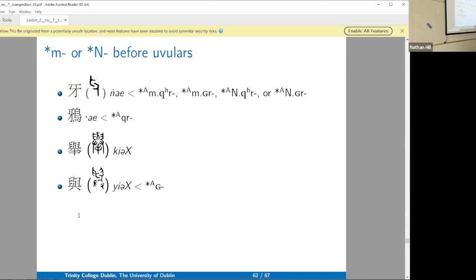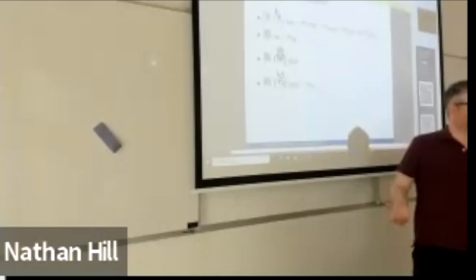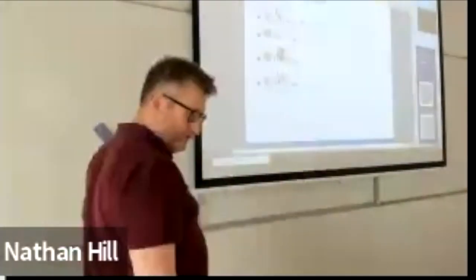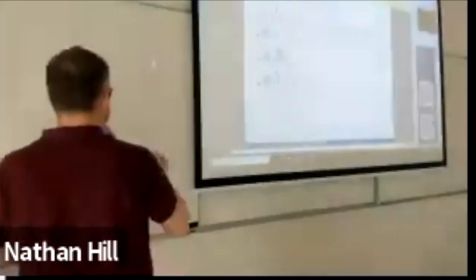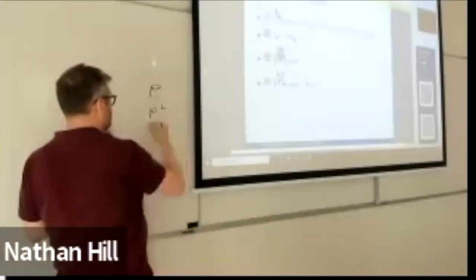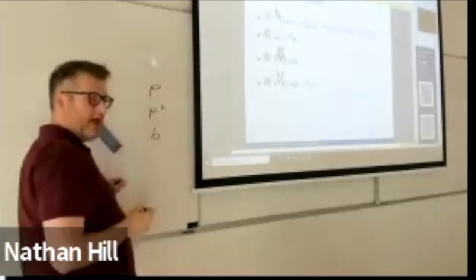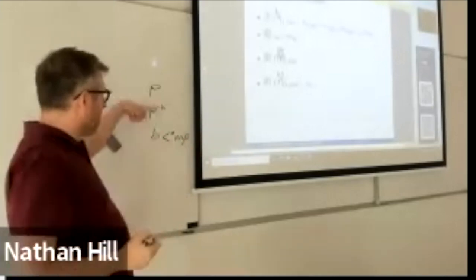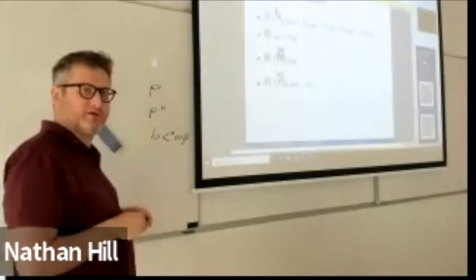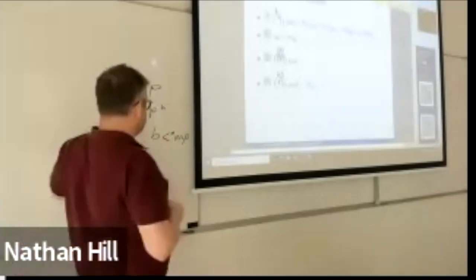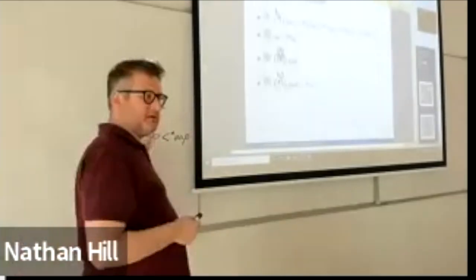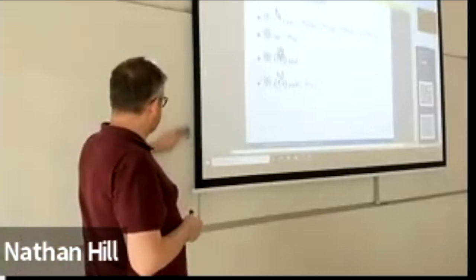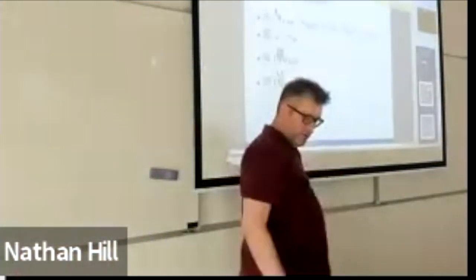You can't tell the nasal pre-initial based on xieshan series before uvulars, and you also can't tell based on xieshan series not before uvulars, because nasal prefixes trigger voicing. In a normal non-uvular xieshan series, you just see pH, E, B — and it could be that B goes back to N-plus-P rather than P. But you can see it with uvular xieshan series. Here we have a uvular nasal in a clear uvular series — you've got a glottal stop and a velar here. What are we going to do with this nasal? We take it back to some nasal prefix.